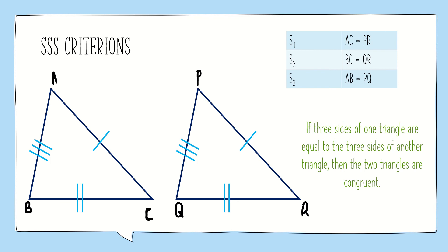The first criterion we are going to study is the SSS criterion. This criterion states that if three sides of one triangle are equal to the three sides of another triangle, then the two triangles are congruent. As we can see in the figure, all three sides are equal — AC is equal to PR, BC is equal to QR, and AB is equal to PQ. Hence the two triangles are congruent.